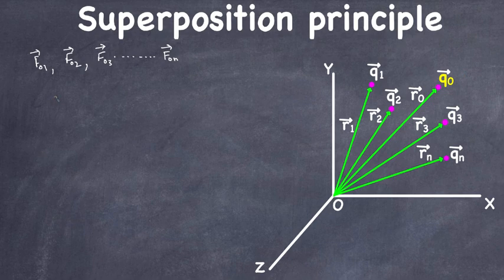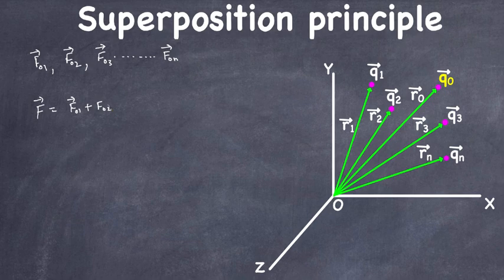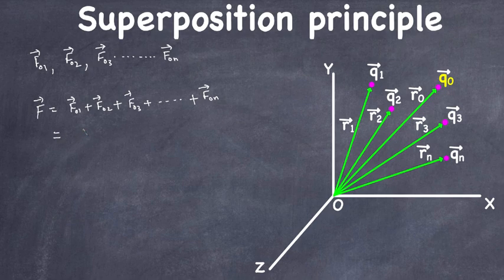So the total force acting on charge Q naught can be written as F equals F naught 1 plus F naught 2 plus F naught 3 and so on until F naught N, where there are any number of charges. This can be written in summation formula form.